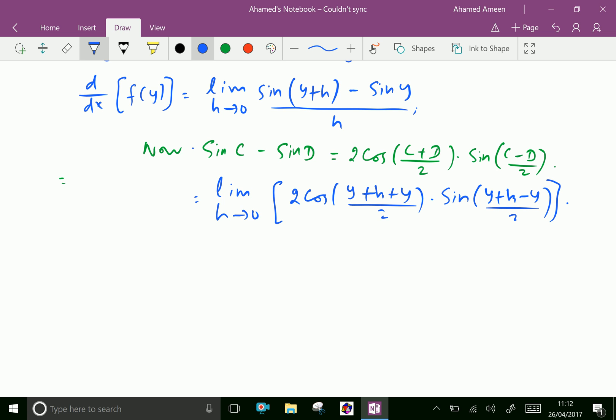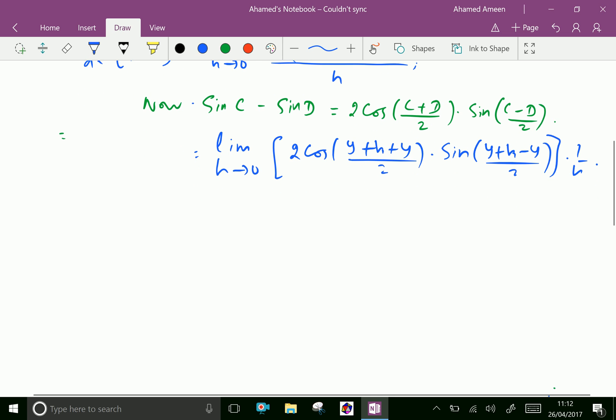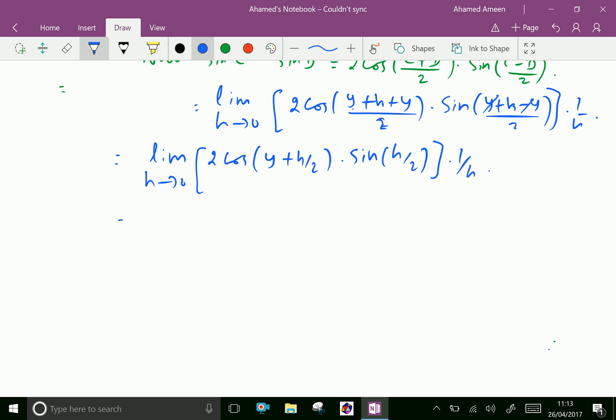h tends to 0, times 1 over h, which equals by simplifying limit h tends to 0, 2 cos of 2y over 2 which is y plus h over 2, times sine of h over 2, times 1 over h.